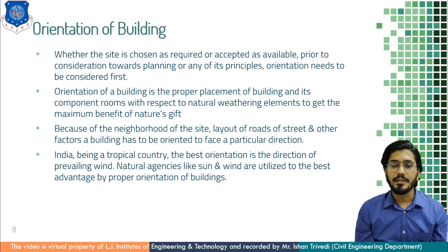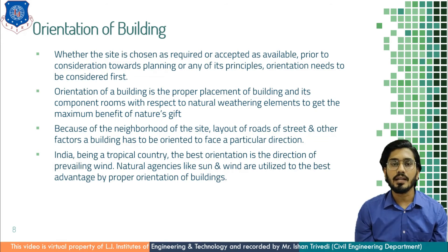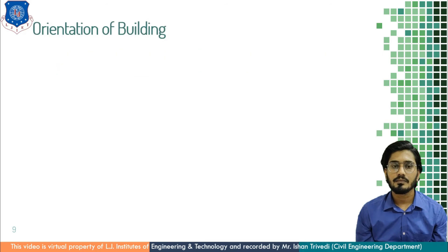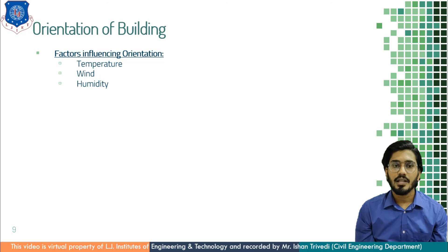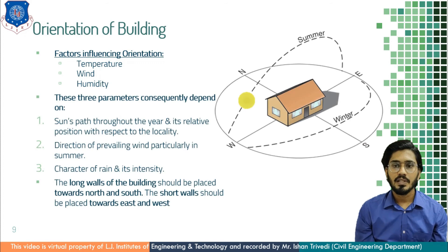In India, being a tropical country, the best orientation is the direction of the prevailing wind. The natural agencies like sun and wind are utilized to get the best advantage by proper orientation of a building. There are certain factors influencing the orientation of a building that we need to understand. These factors are temperature, wind, and humidity. These factors are interrelated with each other and depend upon the sun's path throughout the year and its relative position with respect to locality. The sun path is different in different regions and that we have to understand.